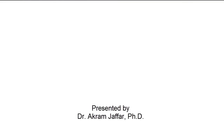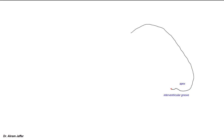This is to briefly describe the blood supply of the heart. Here's the outline of the heart, left border of the heart, the apex, a notch representing the interventricular groove, inferior border of the heart, and the right border.